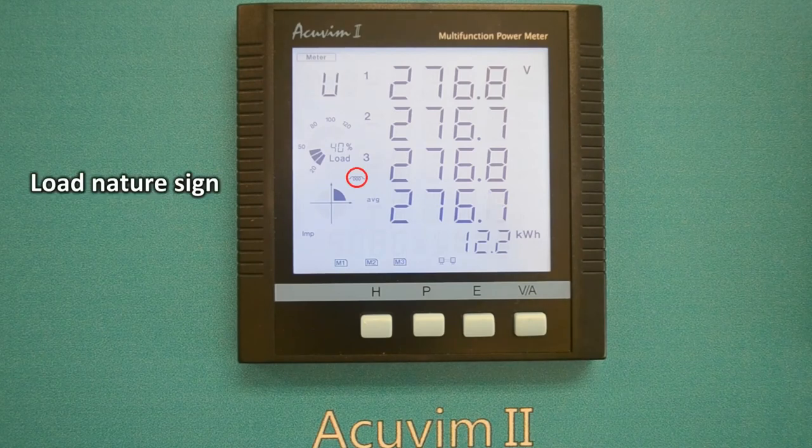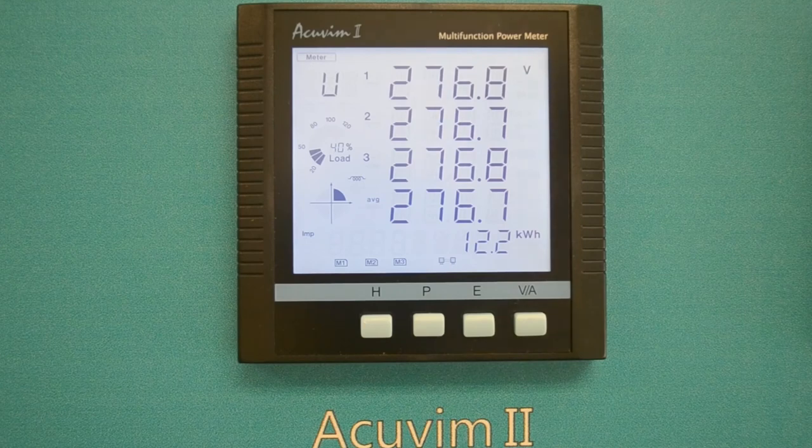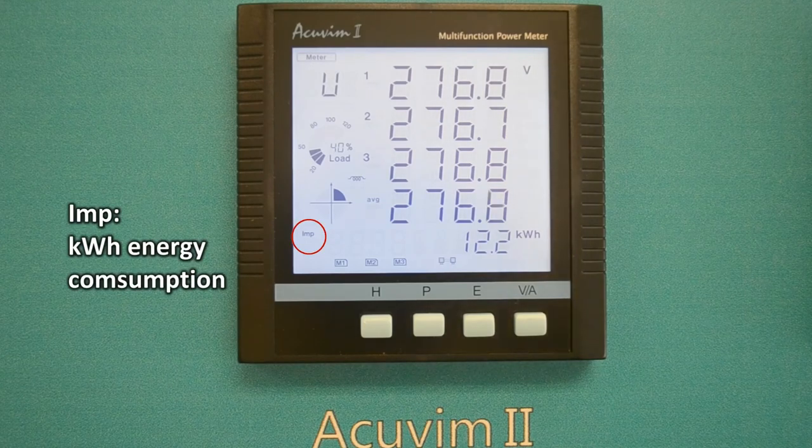The load nature icon indicates if the load is inductive. The IMP icon shows the kilowatt hour energy consumption.